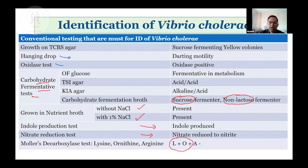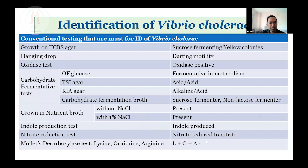Especially when testing the organism using Vitek, many times Vibrio cholerae is falsely identified as Aeromonas sobria. In such situations, lysine can be very useful. Vibrio cholerae will be lysine and ornithine positive and arginine negative. Another valuable test that can be done is the string test, which is also useful in differentiating from other closely related species like Aeromonas.